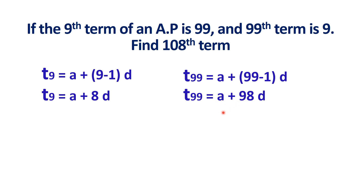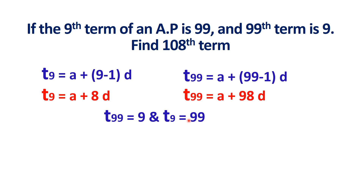We get two equations: T9 equals A plus 8D, and T99 equals A plus 98D. These are two linear equations. We know T99 is 9 and T9 is 99. Substituting, the first equation becomes A plus 8D equals 99, and the second equation becomes A plus 98D equals 9.